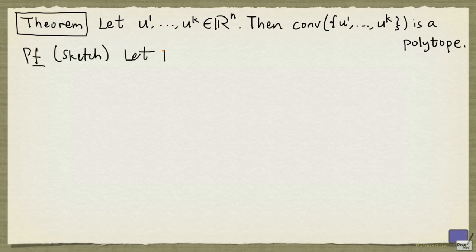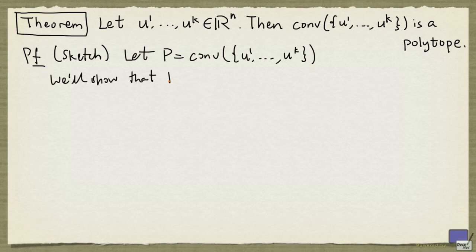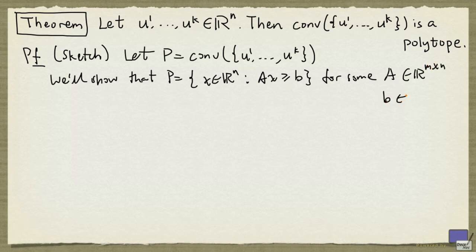So let P denote the convex hull of u^1 up to u^k. We will show that P is the set of x in R^n satisfying Ax ≥ b, where A is an m by n matrix and b is an m-tuple for some positive integer m.